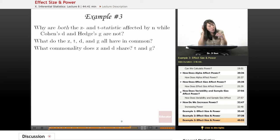Alright, example three. Why are both the Z and T statistic affected by N while Cohen's D and Hedges' G are not? Then, what do the Z, T, D, and G all have in common? And then finally, what commonality does Z and D share? And what commonality does T and G share?